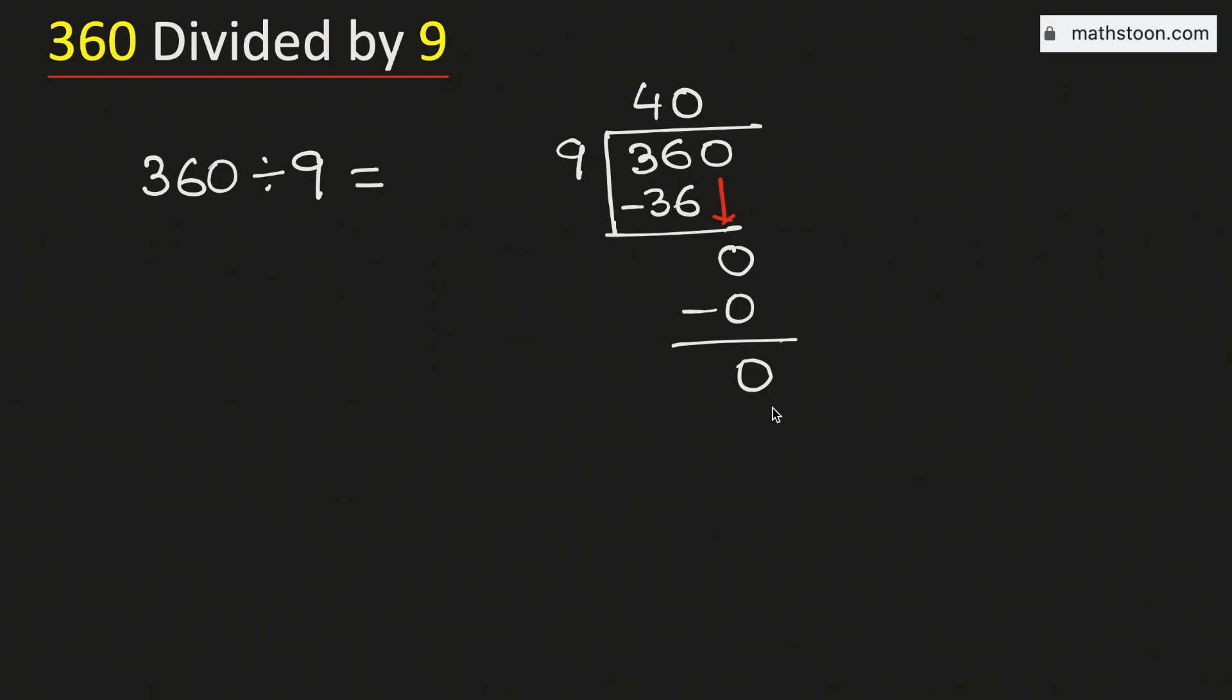As we have got the number 0 and there is no number to bring down here, we will stop. Therefore, 360 divided by 9 is equal to 40, and this is our final answer.